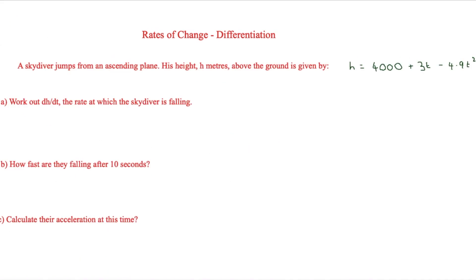So here we have a question with more of a context. And the question goes: a skydiver jumps from an ascending plane and his height h meters above the ground is given by h = 4000 + 3t - 4.9t². So the first thing we have to do—the question is split up into three parts—and the first thing we have to do is work out dh over dt, which is the rate at which the skydiver is falling.